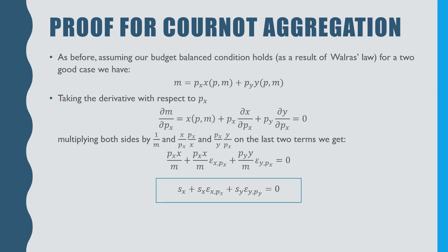So the proof for Cournot aggregation is the following. As before, assuming our budget balance condition holds as a result of Walras' law for the two good case, we have M is equal to the price of good X times good X plus the price of good Y times good Y, where goods X and Y are functions of prices and income M.